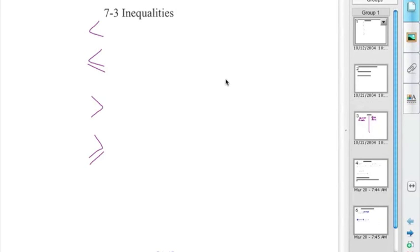This is 7-3 inequalities. This is an introduction to a new type of math symbol that you're going to see. It's going to replace the equal sign. So there are four symbols on the board, two of them you've seen before, and two of them should look somewhat foreign, although kind of familiar.